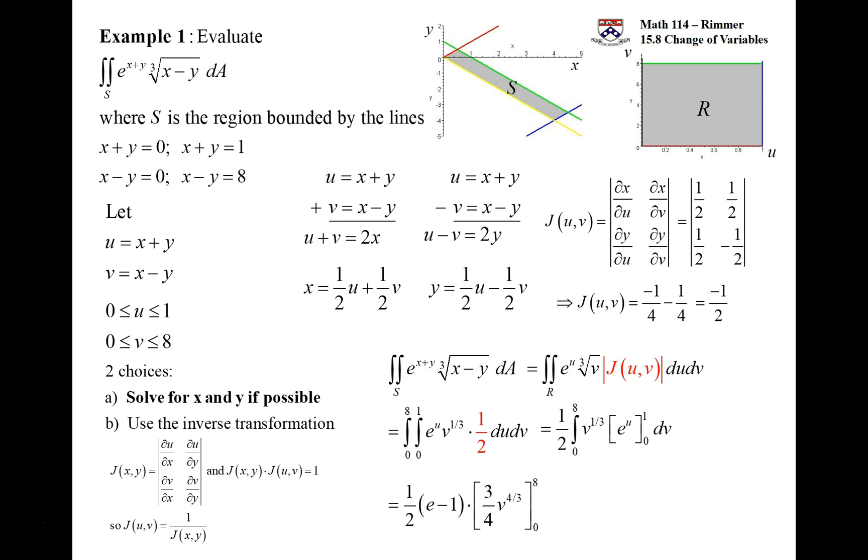When you integrate v^(1/3), you get v^(4/3) but times 3/4. And then we'll put in the 8 and we put in the 0. The 0 will give us a 0, but when we put in the 8, we have to deal with 8^(4/3). But 8 is a perfect cube. When you have a fractional exponent like this, you take the cube root first and then you take it to the 4th power. And so that'll be 2. The cube root of 8 is 2 and that to the 4th is 16. And so then what can happen is that 16 can cancel with the 8. So this guy is a 16 and then it can cancel with the 8 to turn into a 2. And so our final answer to this question is 6 times the quantity of e minus 1.